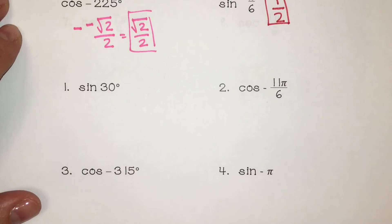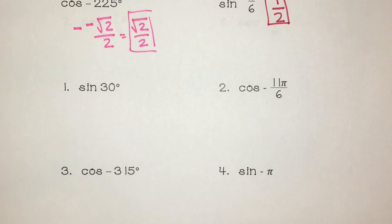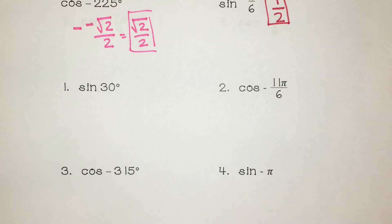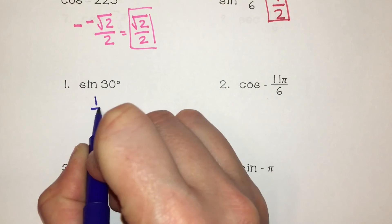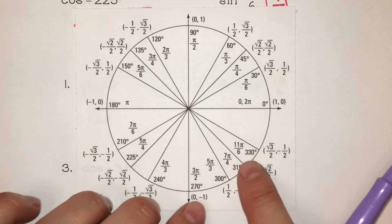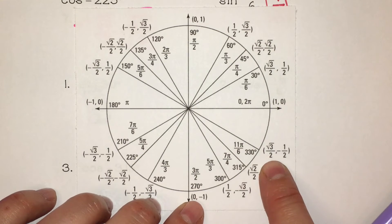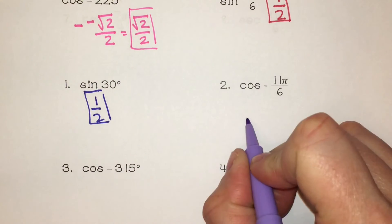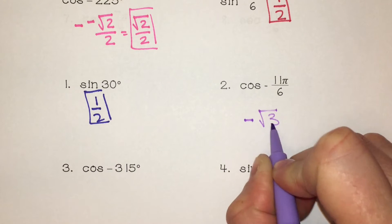Here are four problems exactly like the ones we just did. Sine of 30 degrees — use your unit circle; sine is the y value, so it's 1 half. Cosine of negative 11π over 6 — find 11π over 6; cosine is x, so square root of 3 over 2, but pay attention to the negative, so the answer is negative square root of 3 over 2.